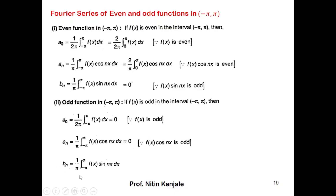Whereas bₙ, which is 1 over pi times the integral of f(x) sin(nx) dx from minus pi to pi, can be written as 1 over pi times 2 times the integral of f(x) sin(nx) dx from 0 to pi. This is because f(x) is an odd function and sin(nx) is also an odd function; odd times odd is an even function. So the integral of an even function over symmetric limits is twice the integral from 0 to pi.